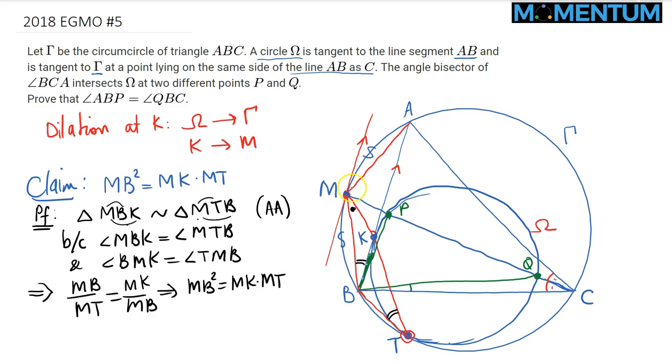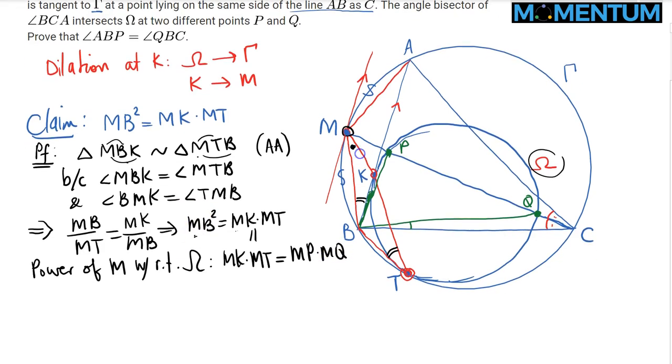Next, we can calculate power of point M with respect to circle omega. That clearly tells us that MK times MT is also equal to MP times MQ. Combining this with the earlier result, MB squared is equal to MP times MQ. We can reorganize this as MQ over MB equals MB over MP.